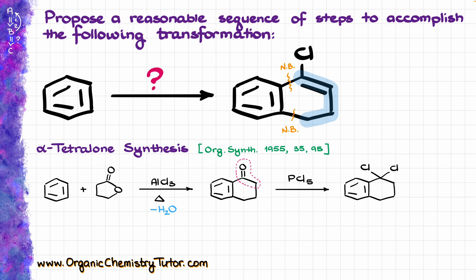And now, once we have our geminal dihalide, we can do a simple elimination reaction using some sort of a base, and I'm using just sodium hydroxide here because why not? And that's going to give us our double bond and we're done.